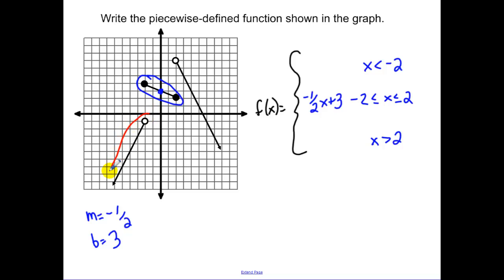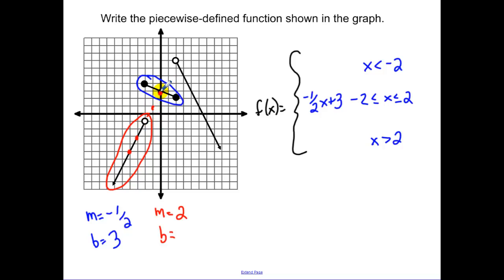For the left function, pick two known points and count the slope: up 2, right 1, giving a slope of positive 2. Extend the line to find the y-intercept is positive 3. So the equation for numbers less than negative 2 is y equals 2x plus 3.